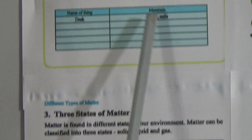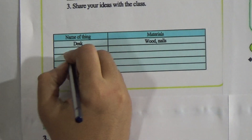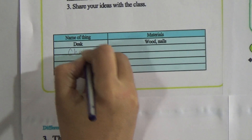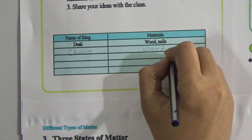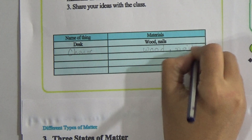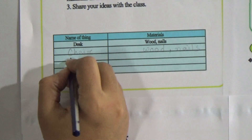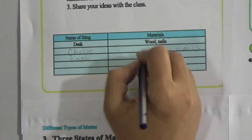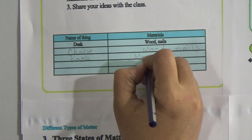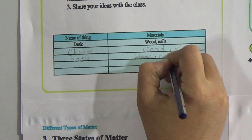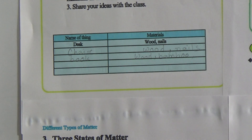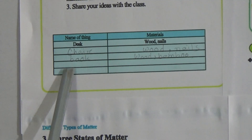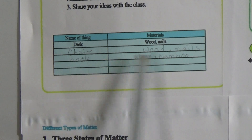In the activity, we see that wood and nails are materials. A chair is made of wood and nails. A book is made from wood, bamboo, or sugar cane. In this way, things are made of different kinds of materials. This leads us to the concept of matter.